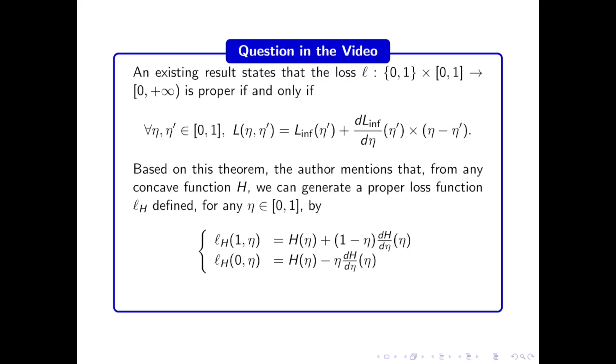In the paper, they state a condition which is sufficient and necessary for a surrogate loss to be proper. And based on this, the author claims that from any concave function h, we can generate a regular proper loss function lh. They further give some explicit formulas for this loss. So my question is, where do those formulas come from? The point here is not to prove that this loss function is proper. On the contrary, I am simply asking about the intuition behind those formulas. I have written the answer to this little question on my blog.